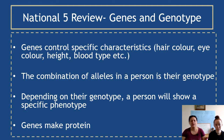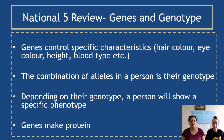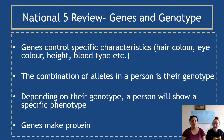The combination of alleles in a person is their genotype. Remember, alleles are different forms of the same gene — so you've got a hair colour gene, and you could have brown, blonde, red, black, or white versions. All of those are the same gene but different forms of it. Depending on their genotype, a person will show a specific phenotype. For example, I have at least one gene for brown hair because my hair is brown when it's not going grey. And the fact that genes make proteins — these are things you should already be aware of.